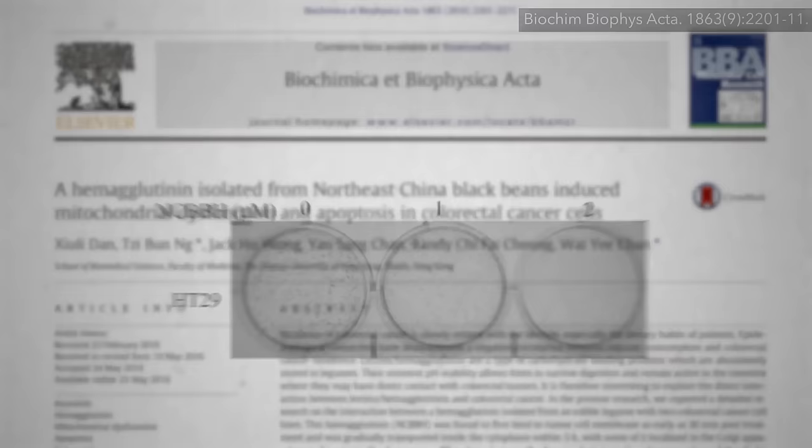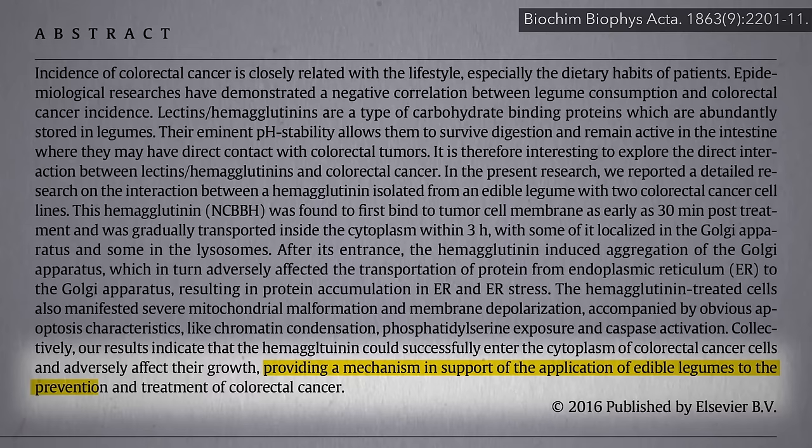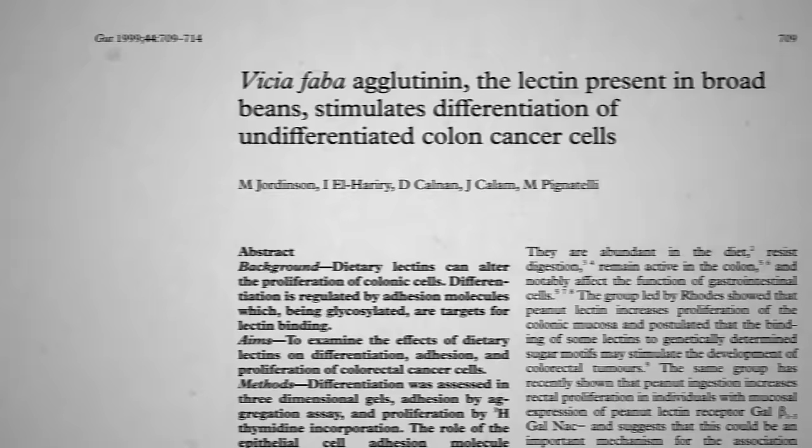Colorectal cancer is one thing. The fact that lectins can kill off colon cancer cells in a Petri dish may be applicable, since lectins we eat may come in direct contact with cancerous or precancerous cells in our colon, providing a mechanism by which bean consumption may help in the prevention and treatment of colorectal cancer.